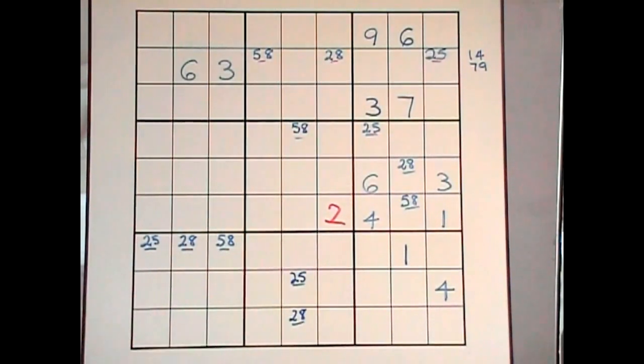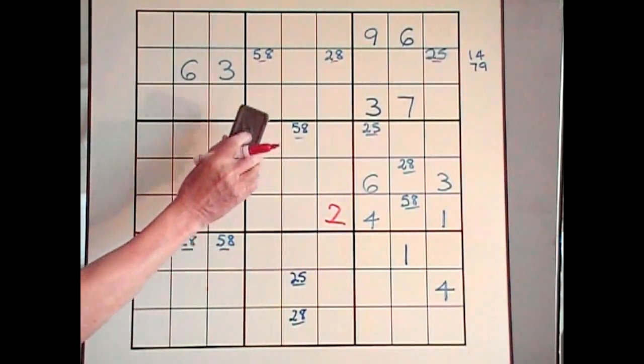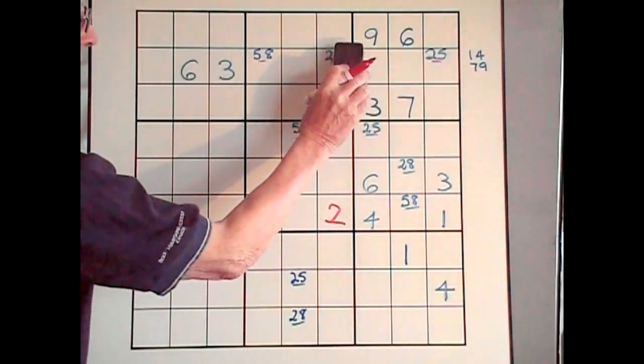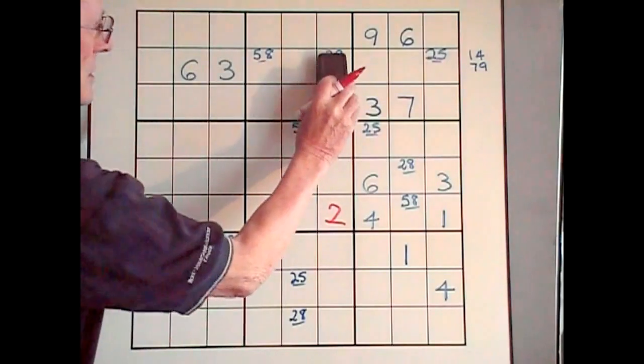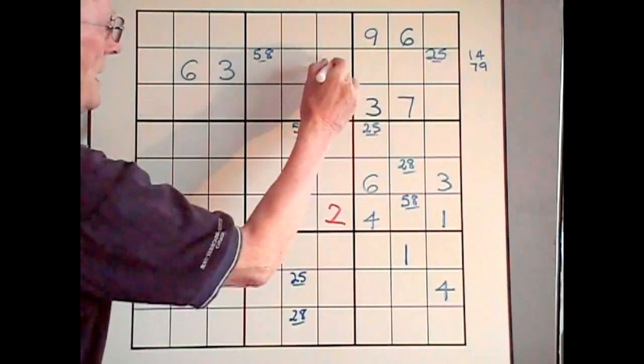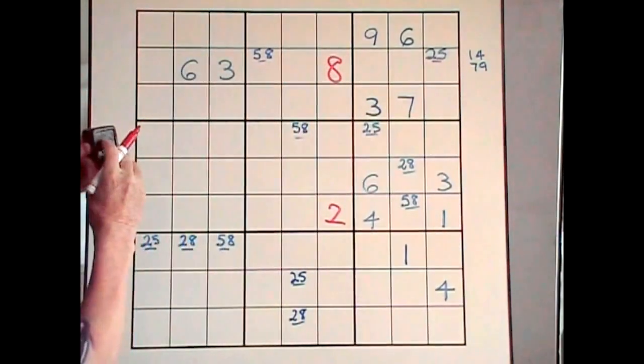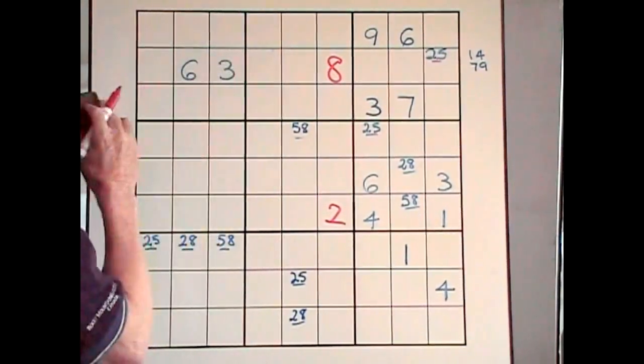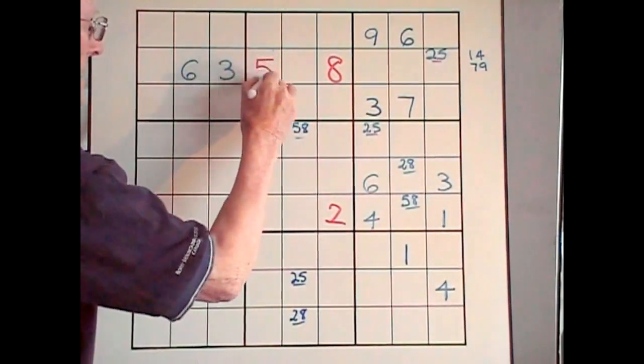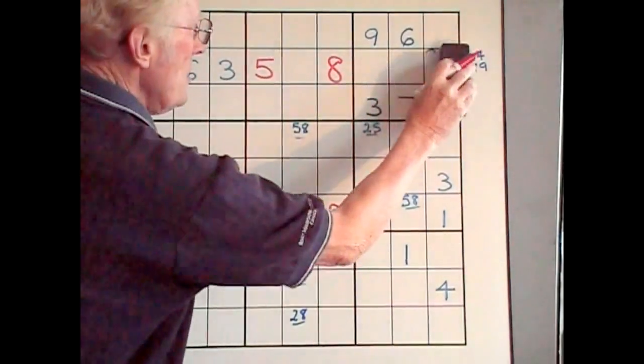Here, that immediately makes a change above. What happens here? This becomes an 8. The 2 is eliminated, because you can't have two 2s in the column. So that becomes an 8. Once you've got that 8, this becomes a 5. Once you've got that 5, this becomes a 2.